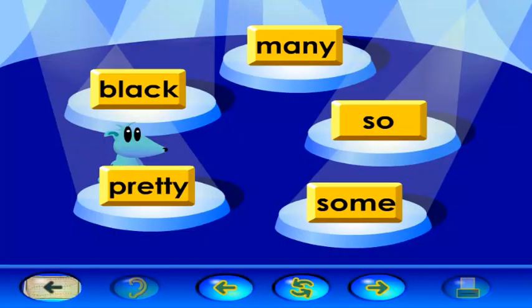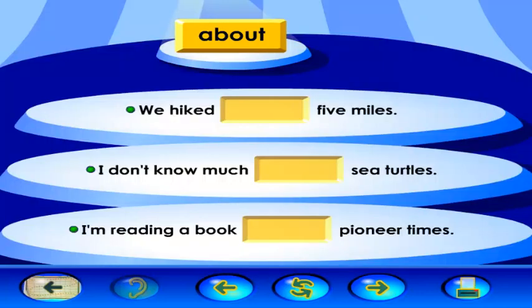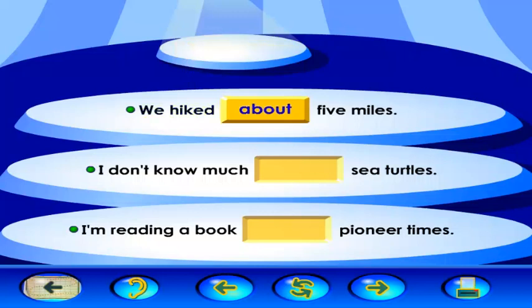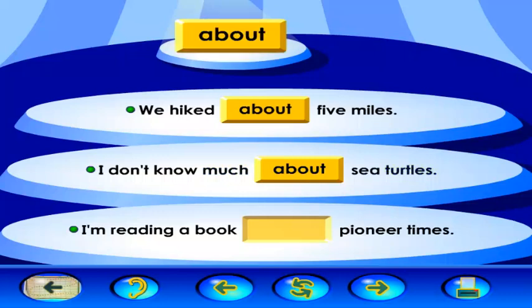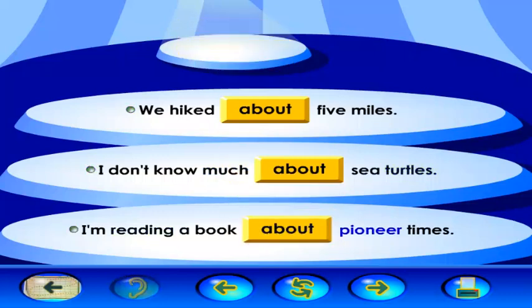Sight words are words you'll need to memorize because you can't really sound them out. Let's learn some sight words. And now, taking the spotlight, the word about. Look at the word and say it out loud with me. About. These sentences are all missing the word about. Drag the word about to an open spot in one of the sentences. We hiked about five miles. Great! Let's complete another sentence. I don't know much about sea turtles. I'm reading a book about pioneer times.